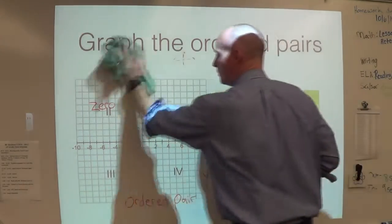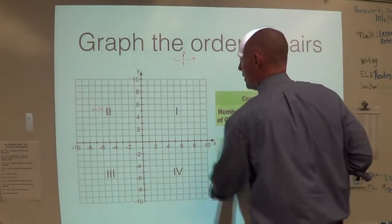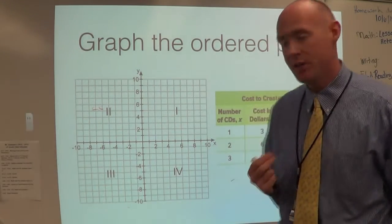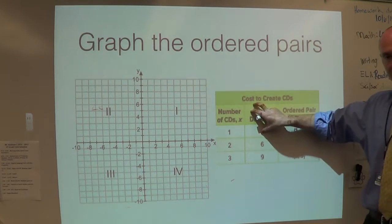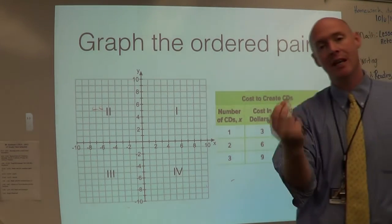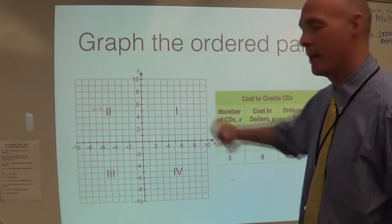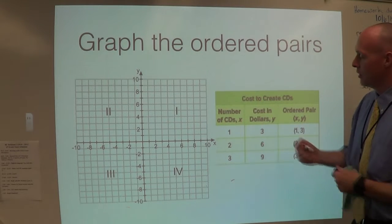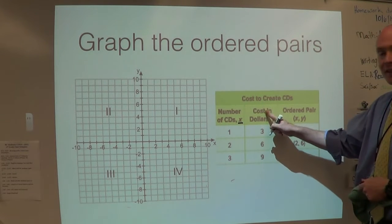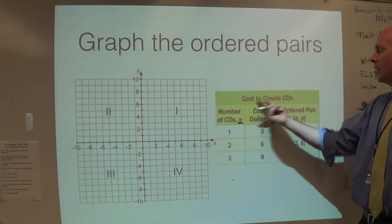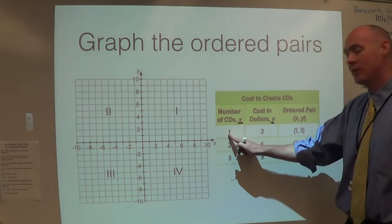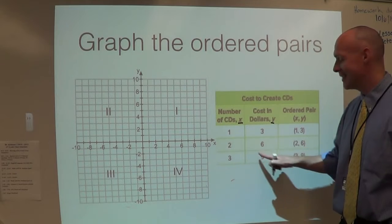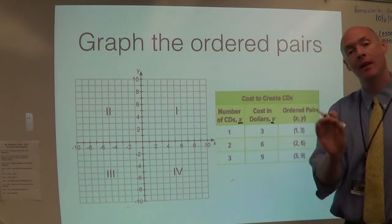So here's an example of a situation you might see where you get a ratio table. And then what you have to do is take the results and plot them on a coordinate plane. So let's look at it. Over here I have number of CDs, which is x, and the cost in dollars, which is y. So what we're looking at is the cost to create a CD. So one CD costs $3 to create, two CDs $6 to create, three CDs $9 to create. The information's already there.